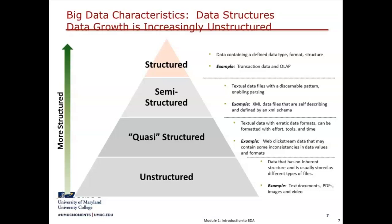The wealth of data we are talking about is in the broader pyramid. Unstructured data is 80%. We have at the bottom truly unstructured data, and different variations like semi-structured and quasi-structured. Understanding the type of data as a data analyst allows you to choose the appropriate method and tools to obtain analytical results.